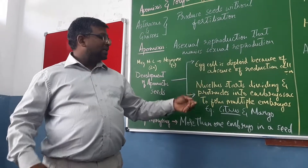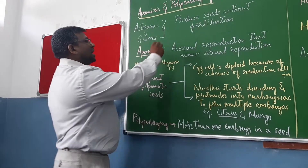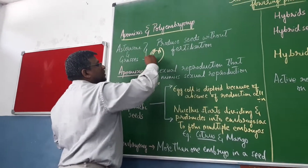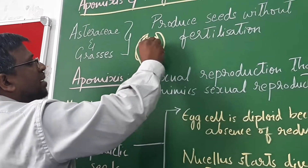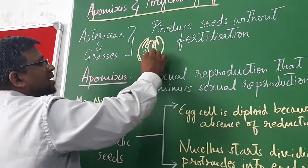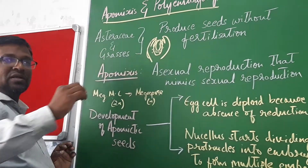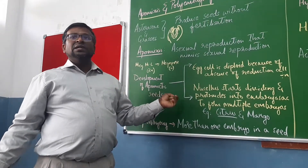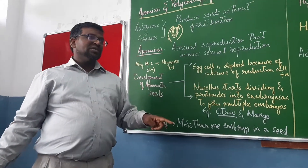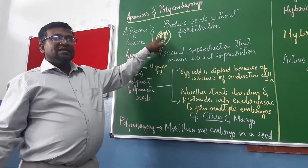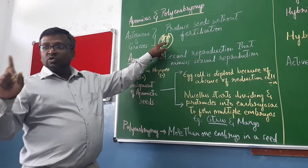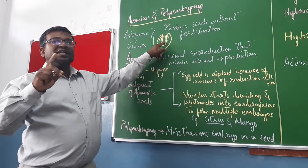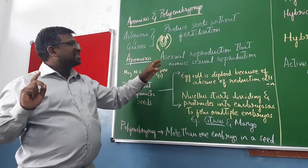The second method involves nucellar tissue. Looking at the structure of an ovule: the embryo sac is surrounded by the nucellar tissue. Normally, one nucellar cell increases in size to become the megaspore mother cell, which undergoes megasporogenesis to form the female gametophyte or embryo sac — the mature 8-nucleate, 7-celled embryo sac of the monosporic type, as discussed earlier.